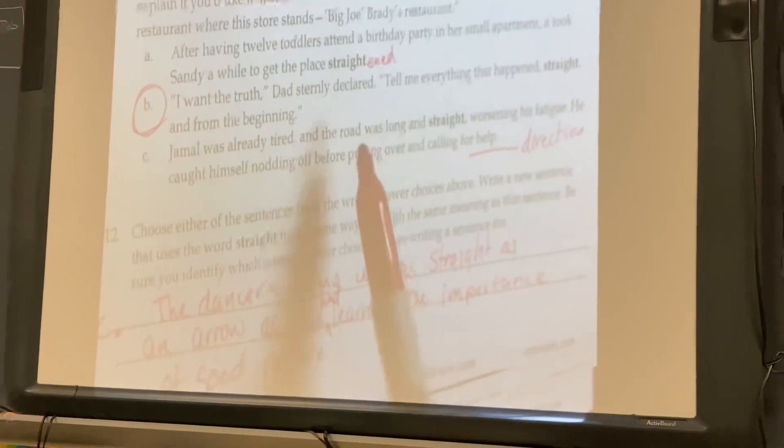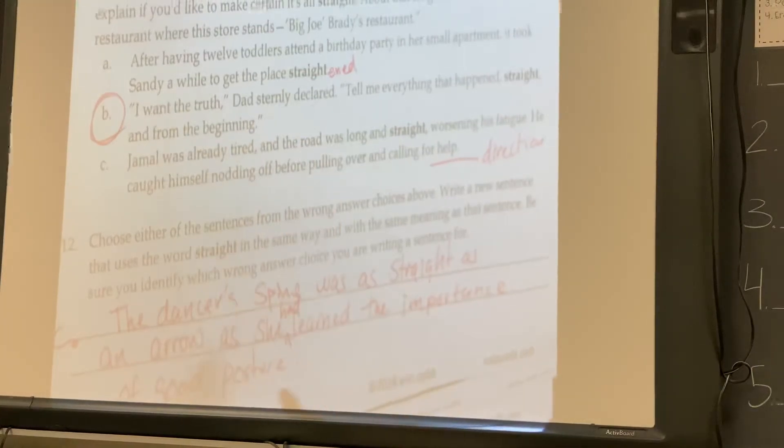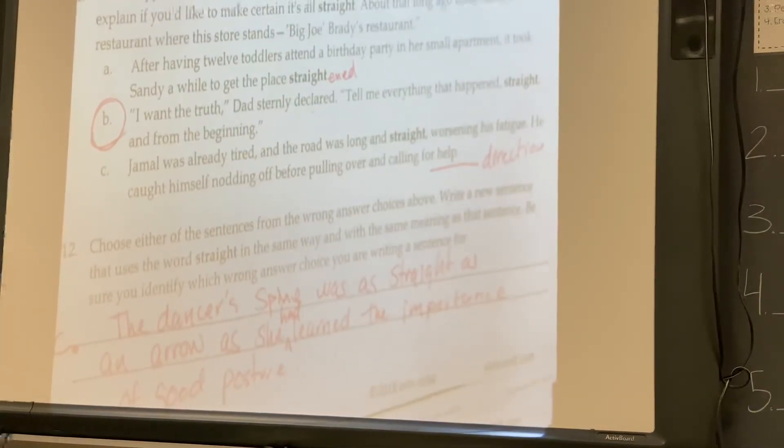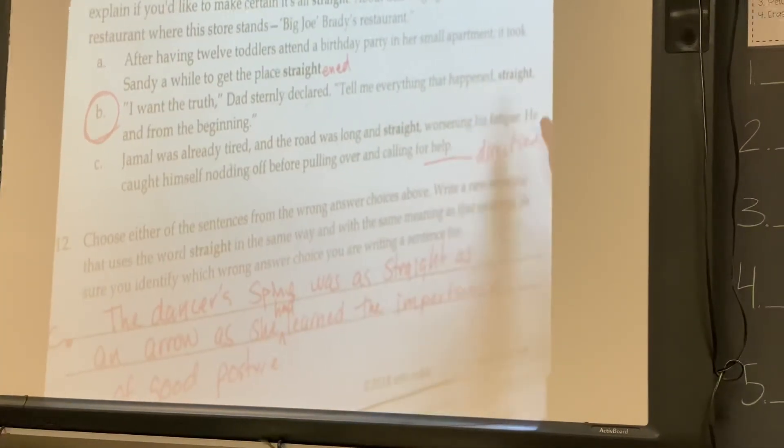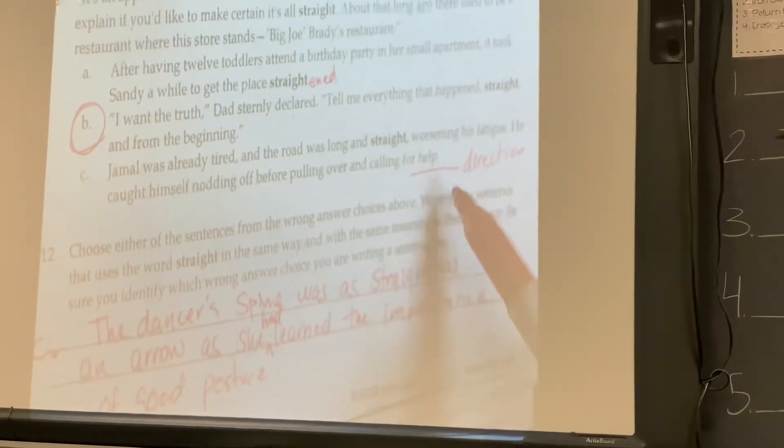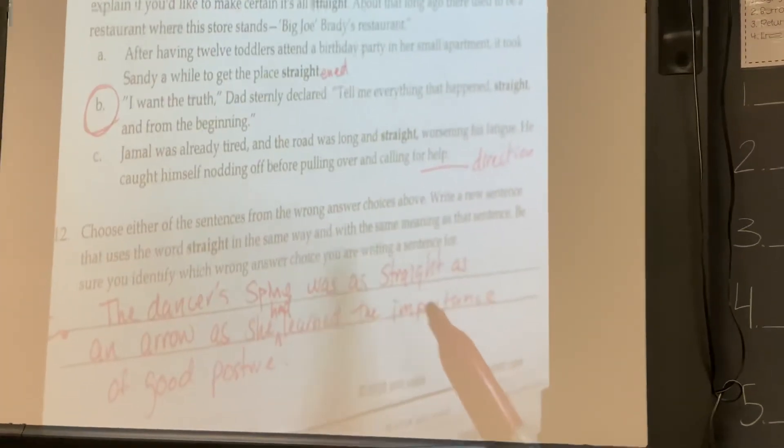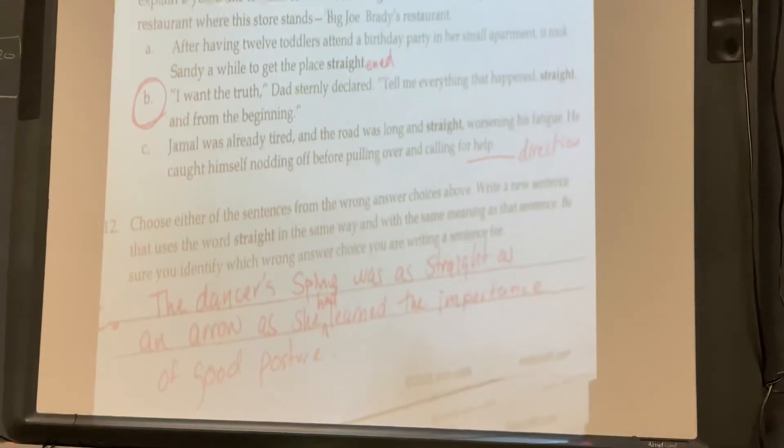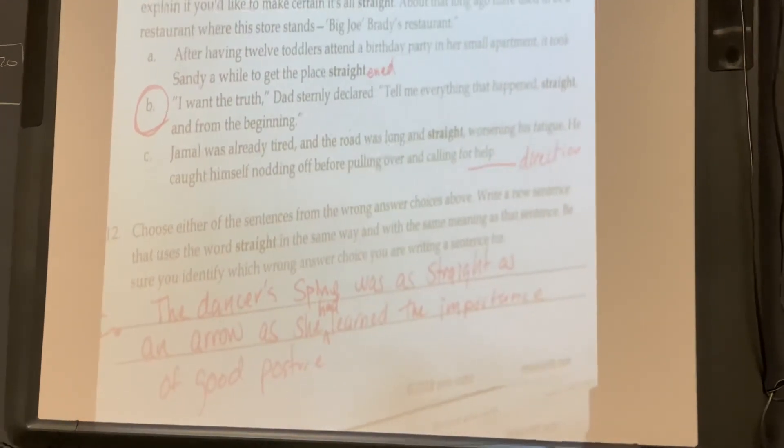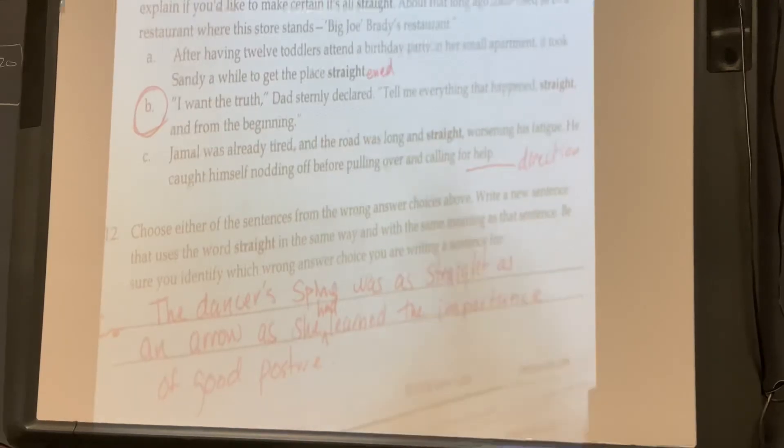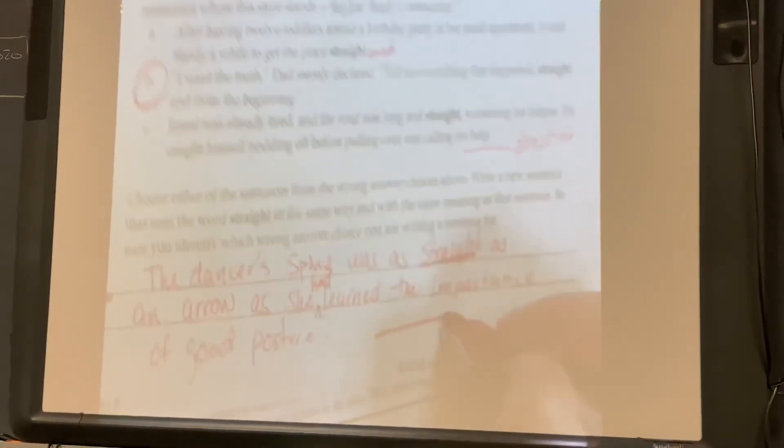And then 12, you're again supposed to pick the one sentence from the wrong answer. So I picked the one for C, which is like the direction straight. And I did the dancer's spine was as straight as an arrow. She had learned the importance of good posture. So I used straight as in the direction straight.